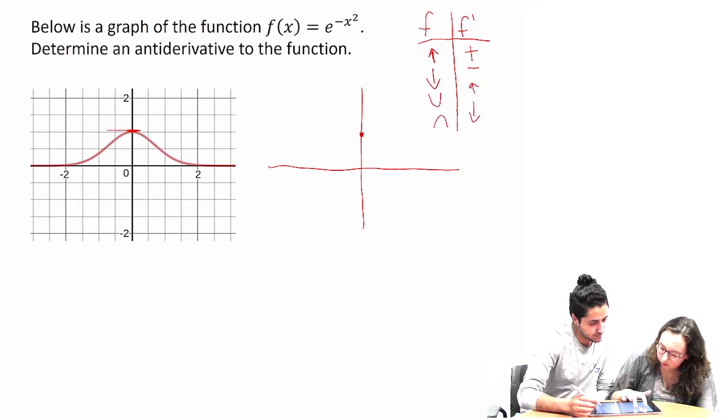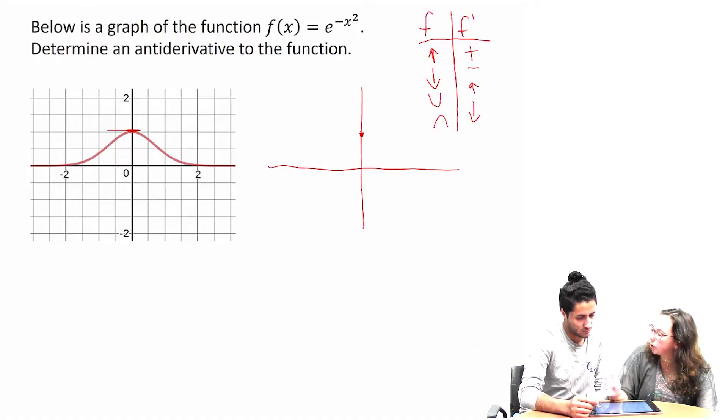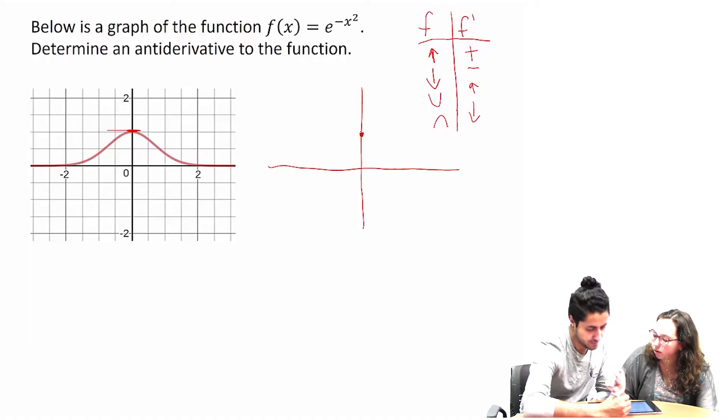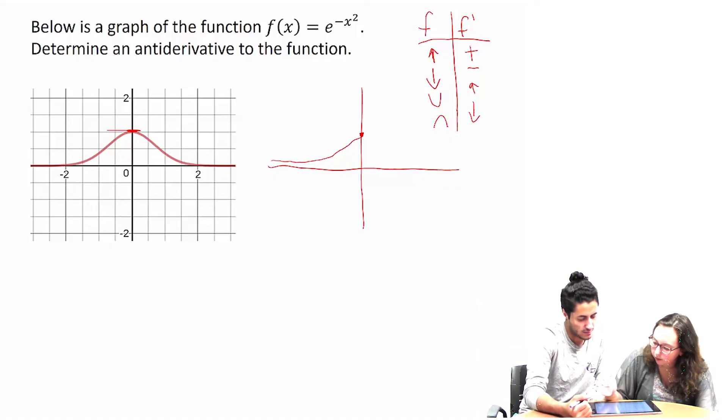From here to here, our derivative is positive because we're above the x-axis, but it's also increasing, which means on this side of the graph, we need to be concave up and increasing. So I'm guessing something along the lines of like that? Yeah. Okay.